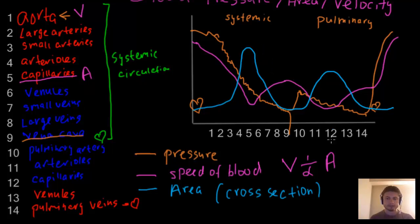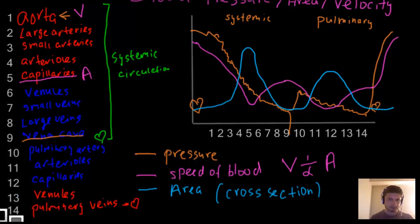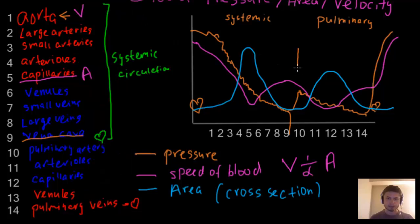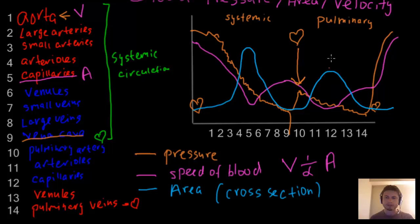Area is inversely proportional to velocity. It's important to note that pressure has a slightly different graph: pressure keeps dropping continuously and only goes back up when the blood re-enters the heart. It does not go up after the capillaries. Velocity and area, however, do change after the capillaries — when blood reaches venules and large veins, velocity increases again as the total cross-sectional area decreases.